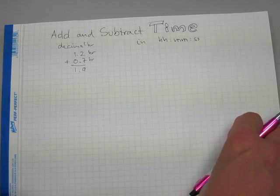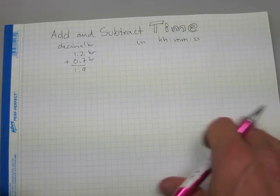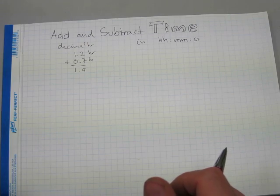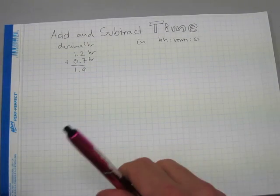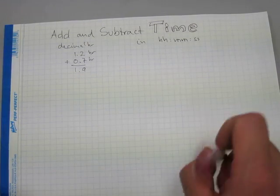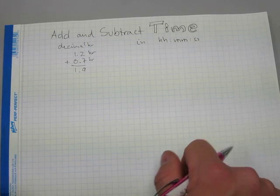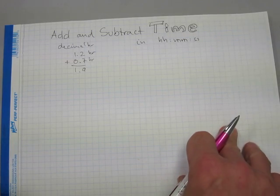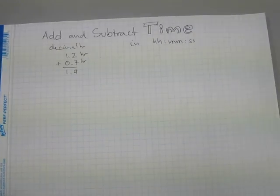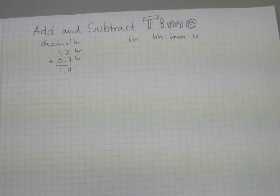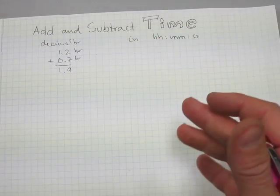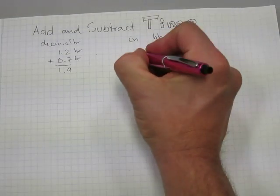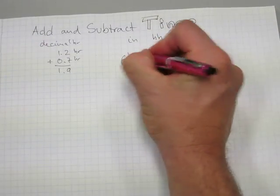Working in hours, minutes, and seconds is also more accurate because in decimal hours you often end up with six or eight significant decimal digits, and it's easier to do some of the calculations in hours, minutes, and seconds. Let's zoom in a little closer and get started.